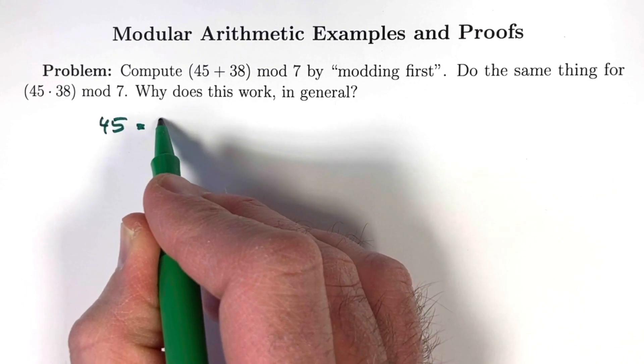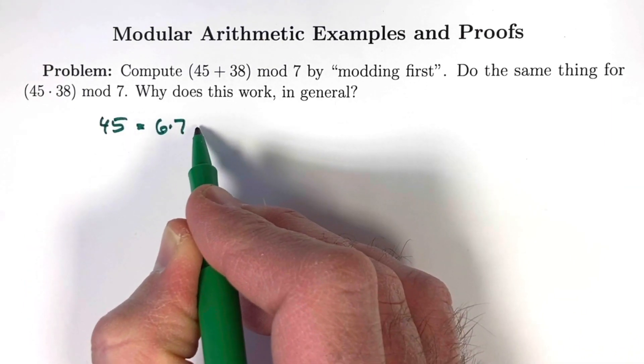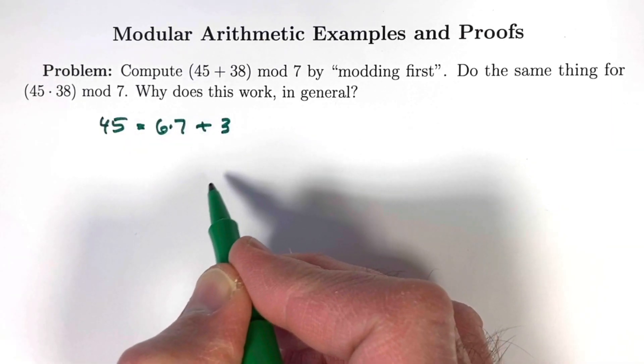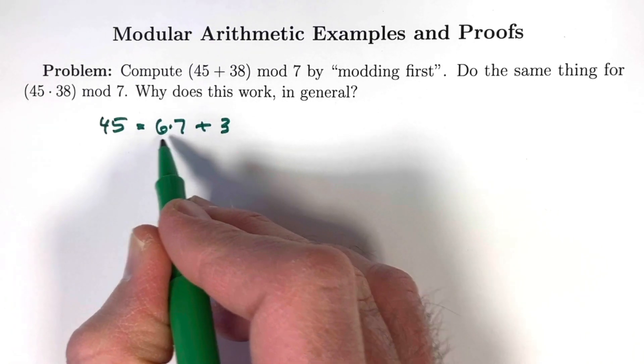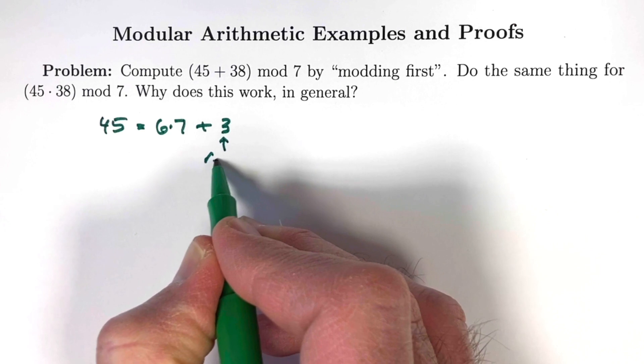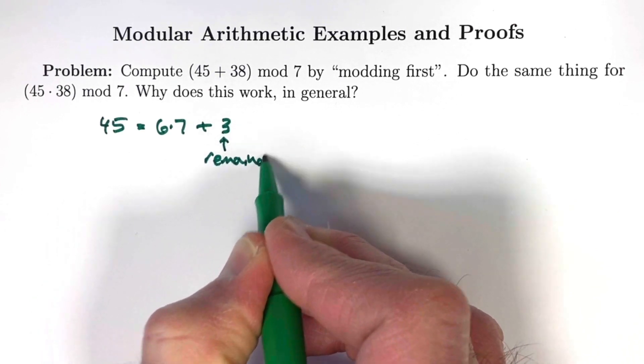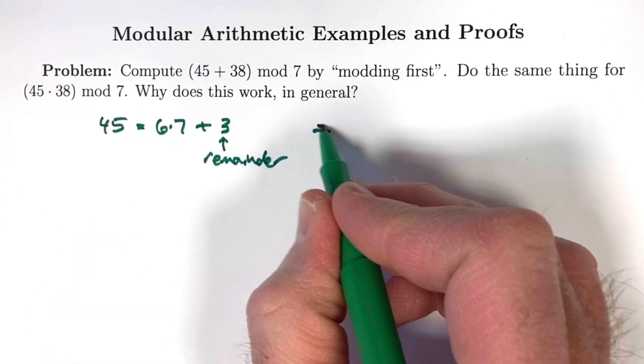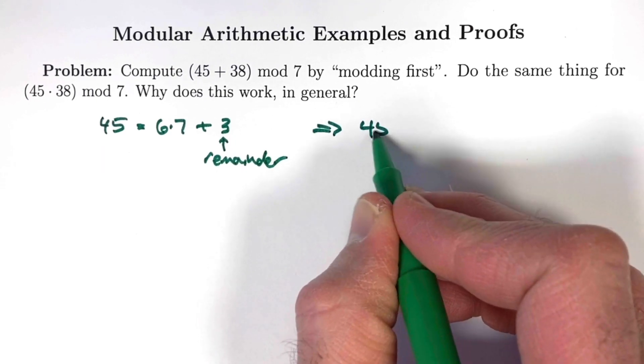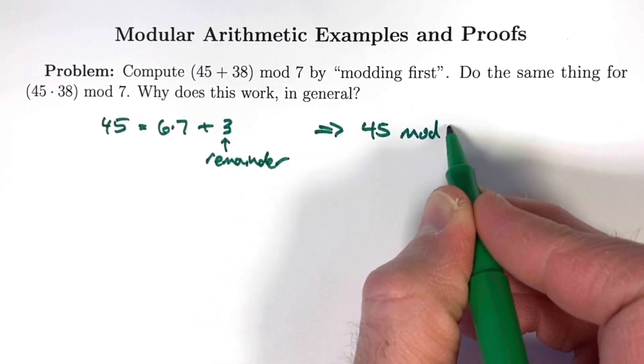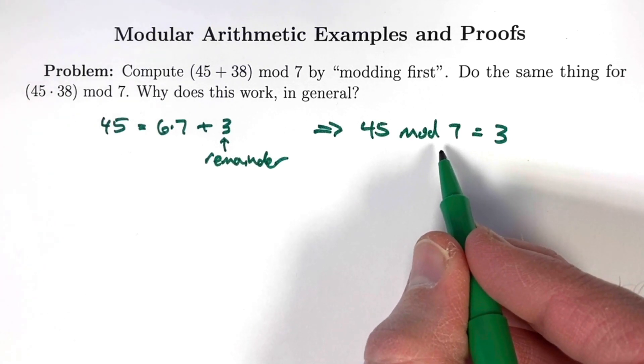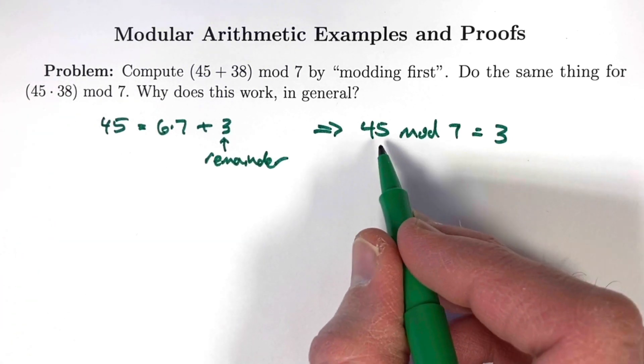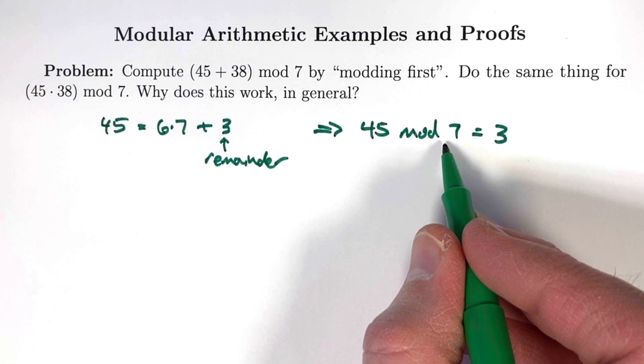45 equals 6 times 7, which is 42, plus 3. In other words, when you divide 45 by 7, you get a quotient of 6 and a remainder of 3. 3 is the remainder, and because of that, that means 45 mod 7 equals 3. This expression represents the remainder you get when you divide this number by this number. It's 3.